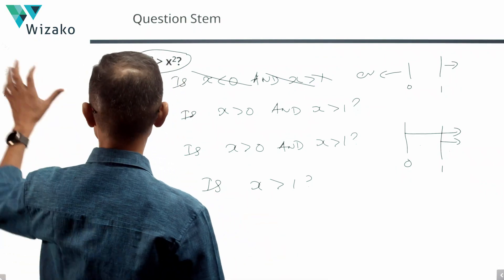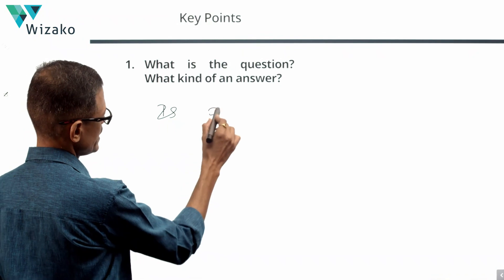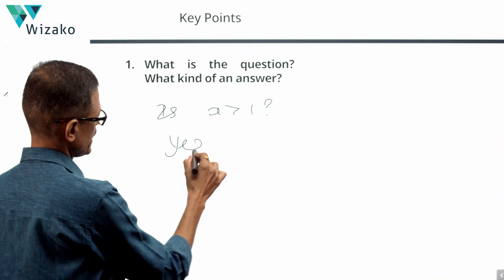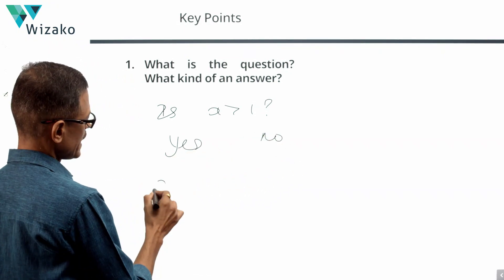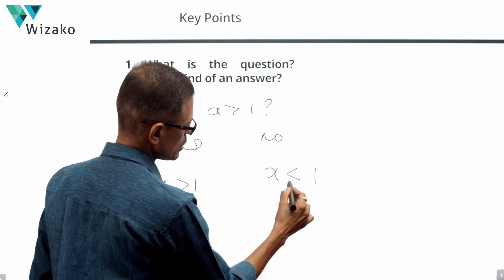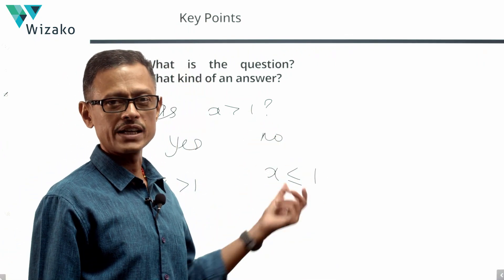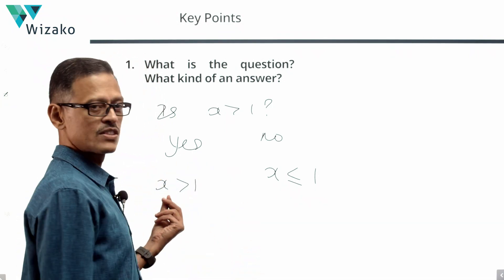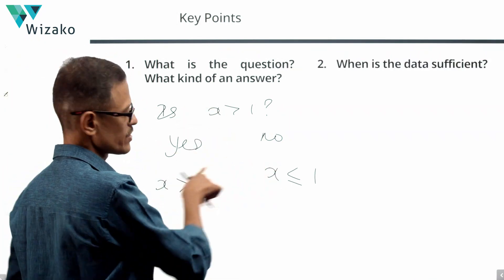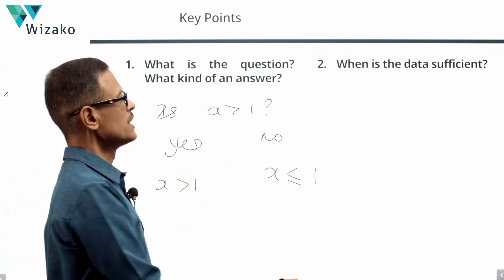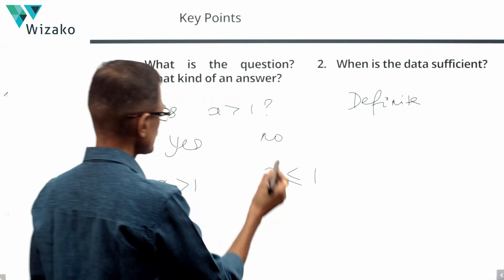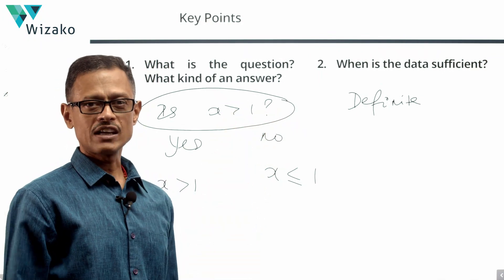Now that we've rephrased the question, we know it's an IS question — 'Is X greater than 1?' The answer will be yes or no. It's a YES when X is greater than 1. It's a NO when X is less than 1, or when X equals 1. The data is sufficient when we get a definitive yes or a definitive no. We'll carry this rephrased question as we evaluate each statement.